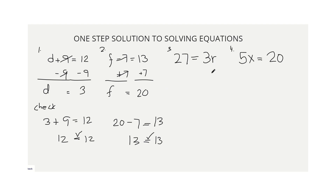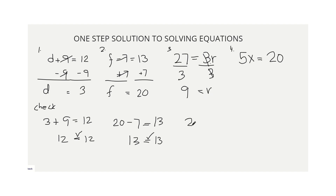Number 3: 27 equals 3R. Since R is being multiplied by 3, divide both sides by 3. On the right, 3 divided by 3 is 1, leaving R. On the left, 27 divided by 3 is 9. Therefore, R equals 9. To check: 27 equals 9 times 3, which is 27 equals 27. This is true — the value of R is 9.